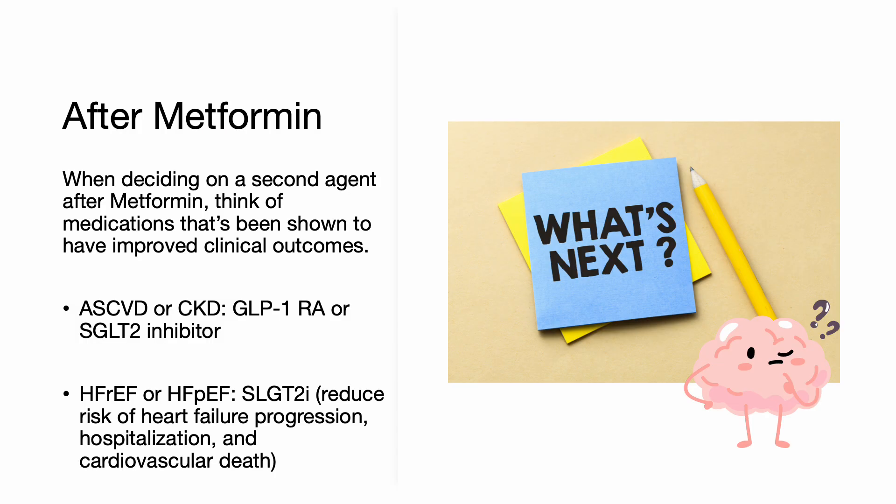When deciding on a second agent after metformin, think of medications that have been shown to have improved clinical outcomes. In patients with ASCVD or risk factors for ASCVD or CKD, choose a GLP-1 receptor agonist or an SGLT2 inhibitor. In patients with heart failure with reduced or preserved ejection fraction, choose an SGLT2 inhibitor, which has been shown to reduce risk of heart failure progression, hospitalization, and cardiovascular death.